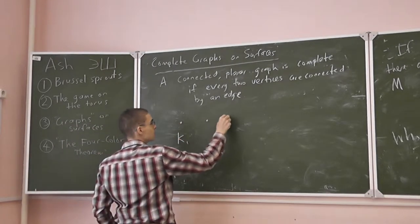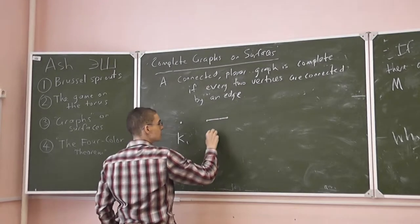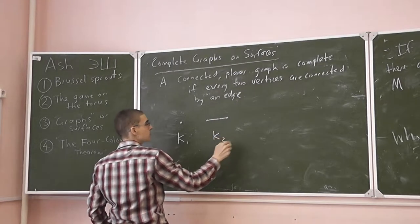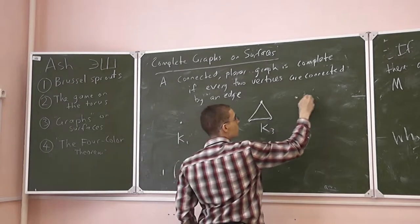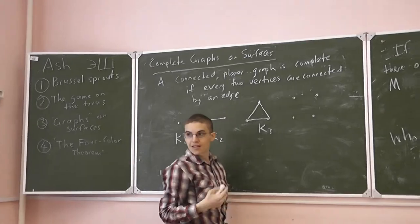If we have two vertices, then it's K2. If we have three vertices, then it's K3. And before, we drew that before, you guys told me what...